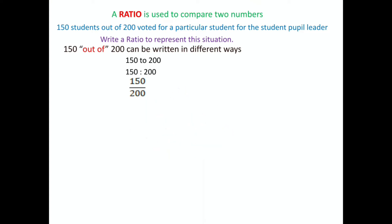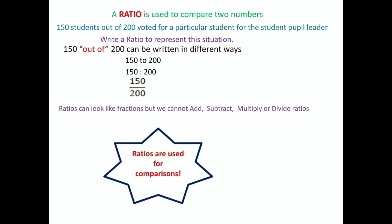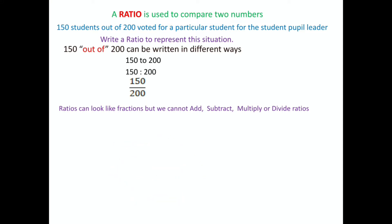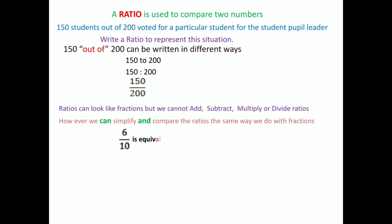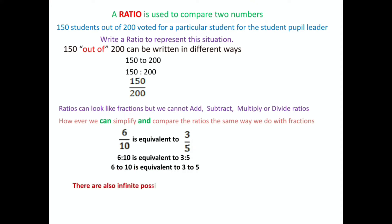Ratios can look like fractions, but we cannot add, subtract, multiply, or divide ratios. We can only compare them. However, we can simplify and compare ratios the same way we do with fractions. For example, 6 by 10 is equivalent to 3 over 5. There are also infinite possibilities for equivalent ratios.